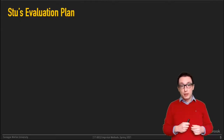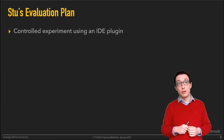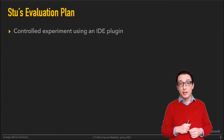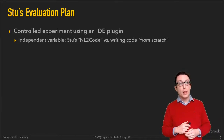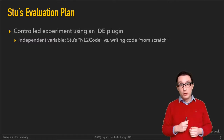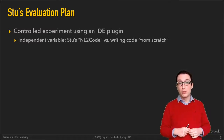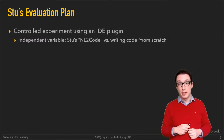Stu thought that the best way to evaluate this tool is through a controlled experiment in a lab setting. He built an IDE plugin for people to use this AI within their editors. He has thoughts to measure a number of variables, comparing two groups of programmers: those using this technology versus those writing code from scratch, evaluating the usefulness of this technology in a controlled setting.